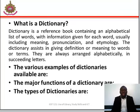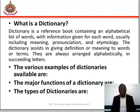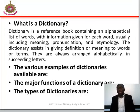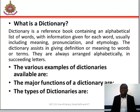Now let's look at the types of dictionary. Number one: language dictionaries. Dictionaries could be monolingual — written with only one language — for instance, the New Universal Unabridged Dictionary or the Oxford English Dictionary.